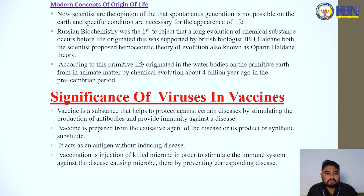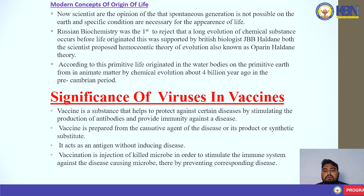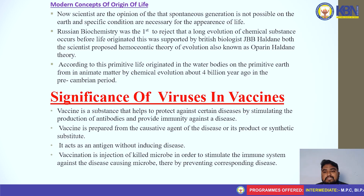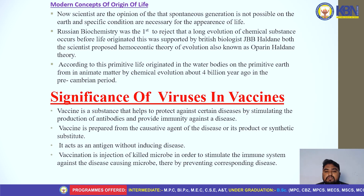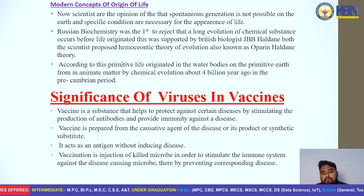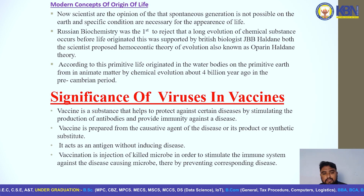The Modern Concept of the Origin of Life: Modern scientists are of the opinion that spontaneous generation is not possible, and specific conditions were necessary for the appearance of life. The Russian biochemist Oparin was the first to suggest that a long chemical evolution occurred before life originated. This was supported by British biologist J.B.S. Haldane. Both scientists proposed the biochemical theory of evolution, also known as the Oparin-Haldane theory — according to which primitive life originated in water bodies on the primitive Earth from inanimate matter by chemical evolution, about 4000 million years ago in the pre-Cambrian period.